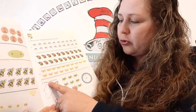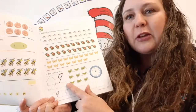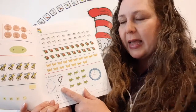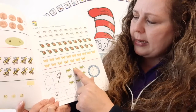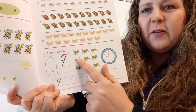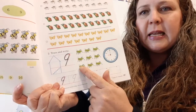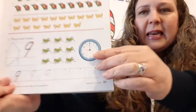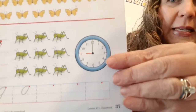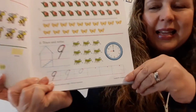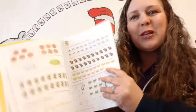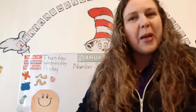And here it says trace and write. We're going to trace and write the number nine. How many grasshoppers are there? One, two, three, four, five, six, seven, eight, nine. And what time is it? It's nine o'clock. That's right. You can do it. And that is our math and number skills class for today. I'll see you tomorrow. Bye.